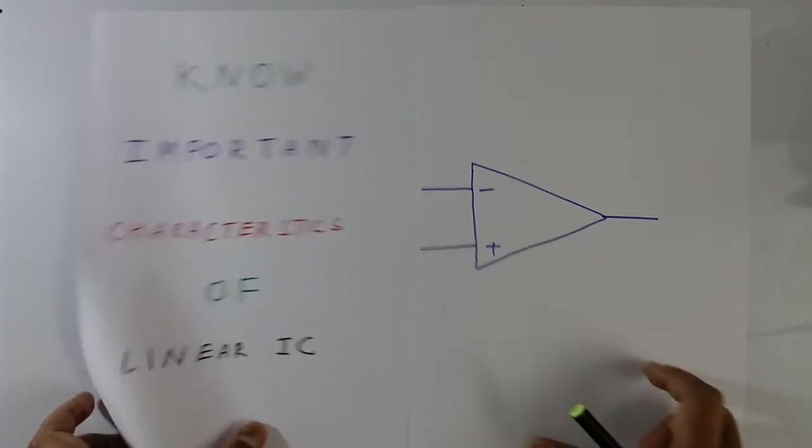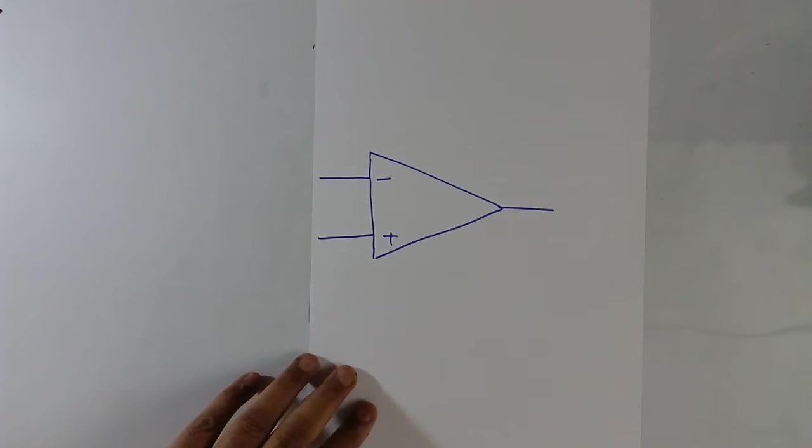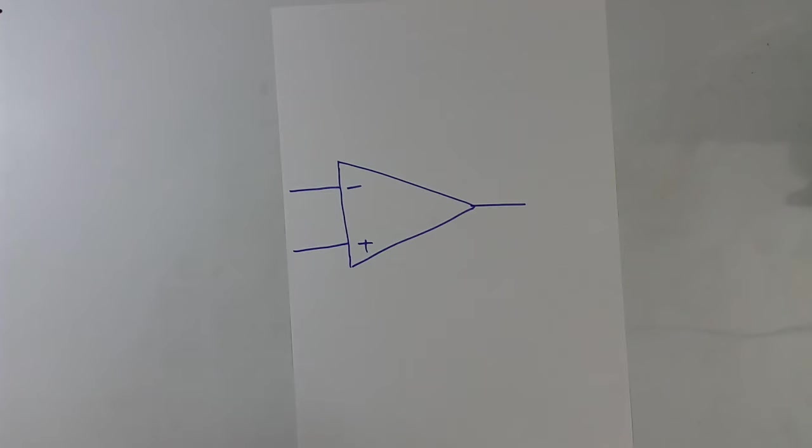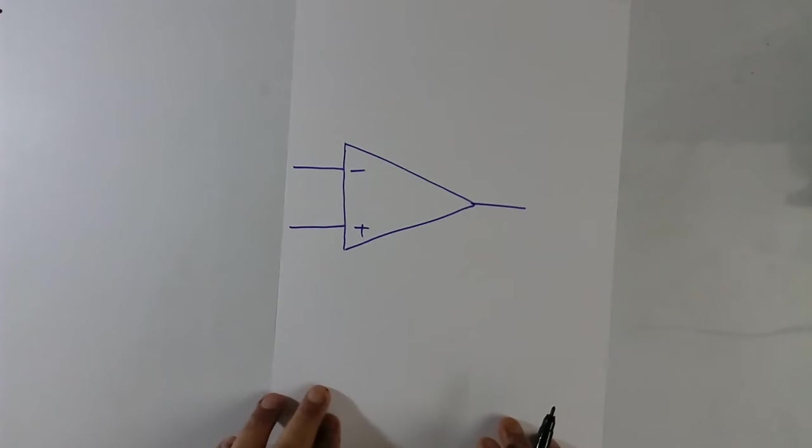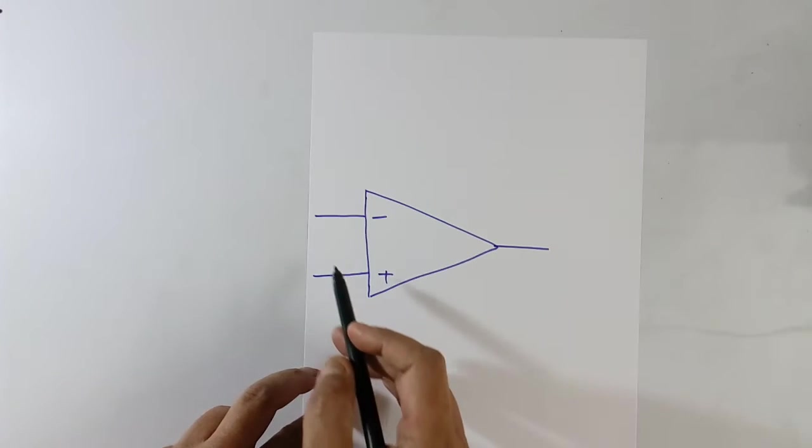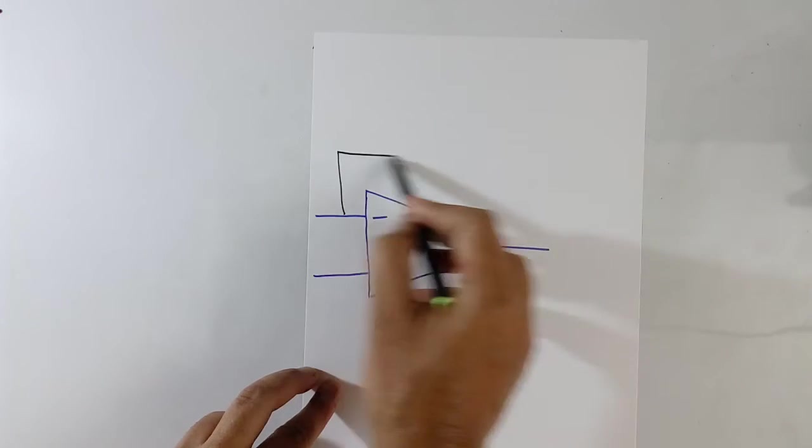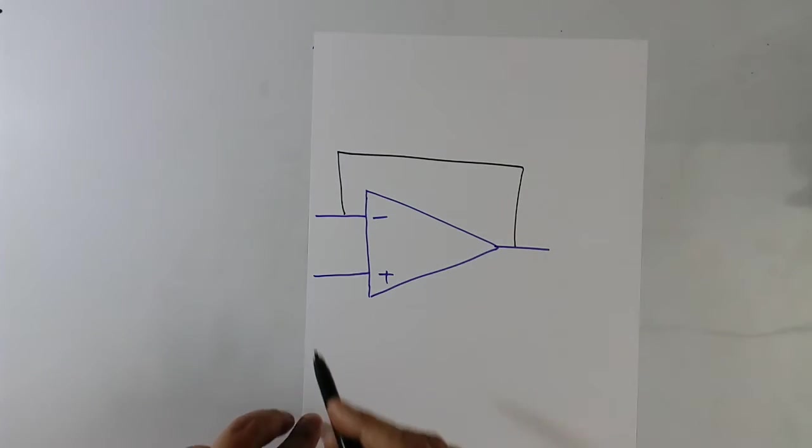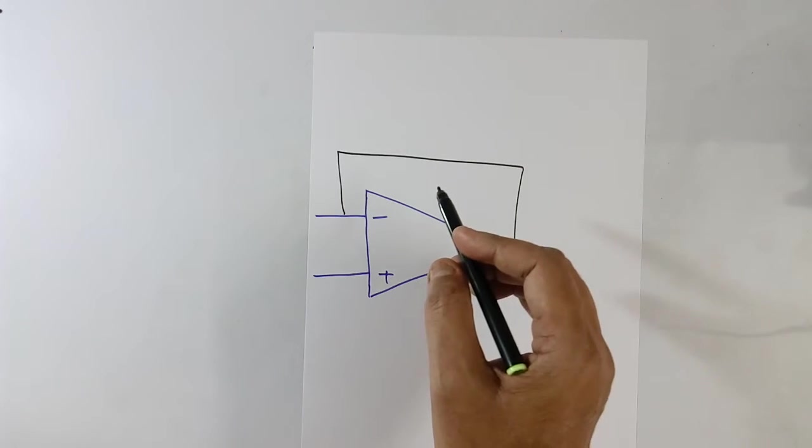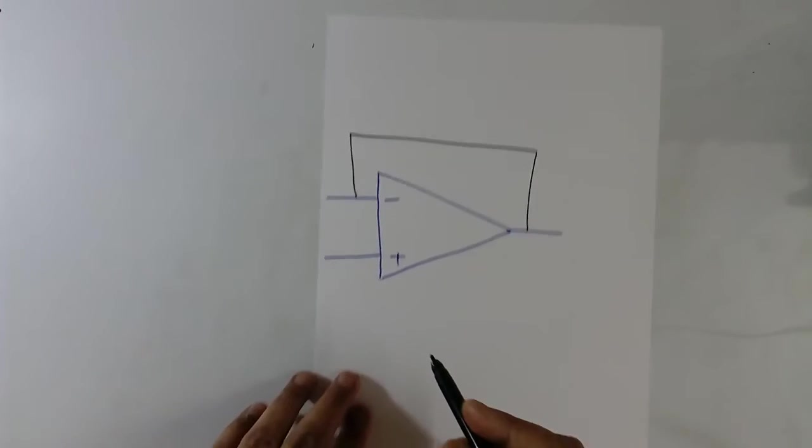Linear IC operates in two ranges. One is linear range, another is saturated range. I will tell the difference. Suppose you have this IC and arrange IC like this, something like unit gain operational amplifier.